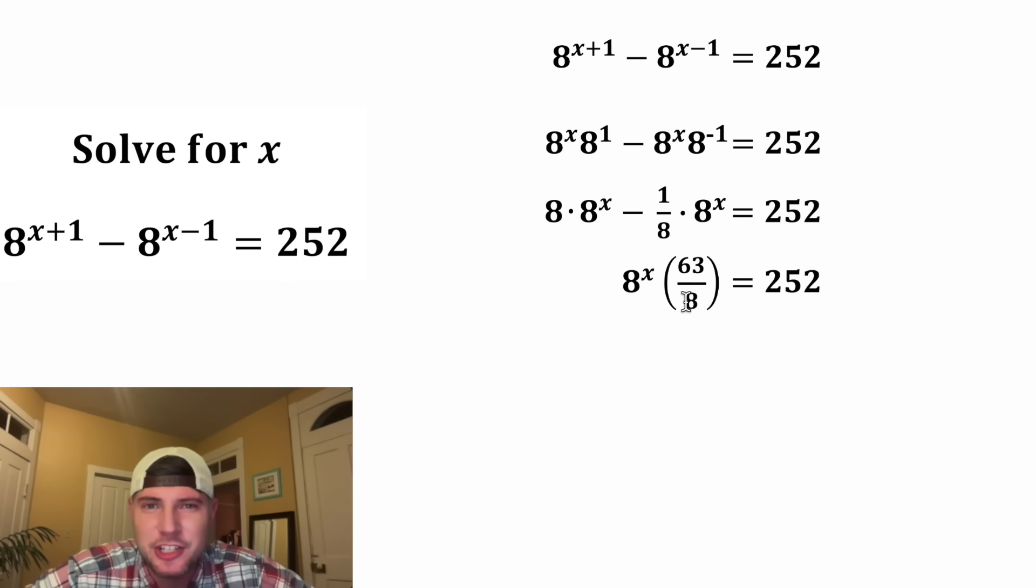I don't really like fractions, so let's get rid of this fraction. We can multiply both sides by the reciprocal, 8 over 63. On the left-hand side, since they're reciprocals, these two will cancel each other out. On the right-hand side, we can simplify. The 252 on top can be divided by 63 to give us 4. And then 4 times 8 is 32.